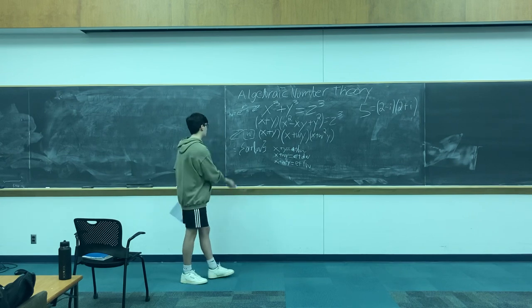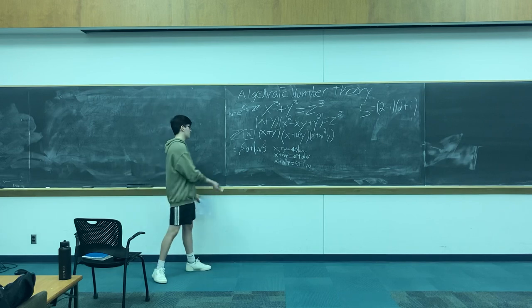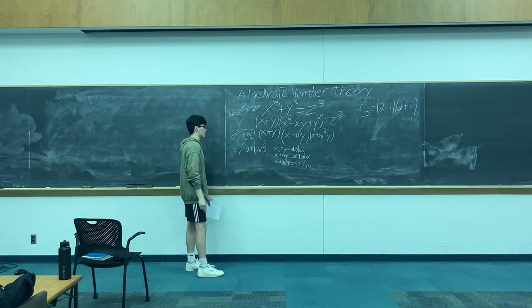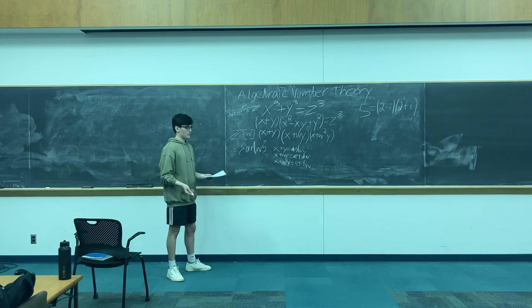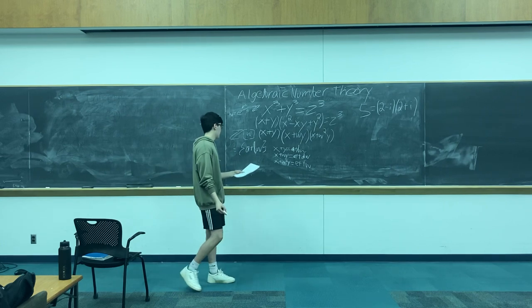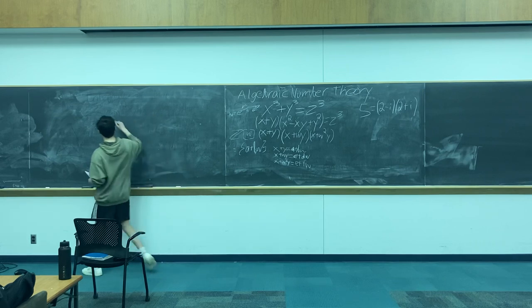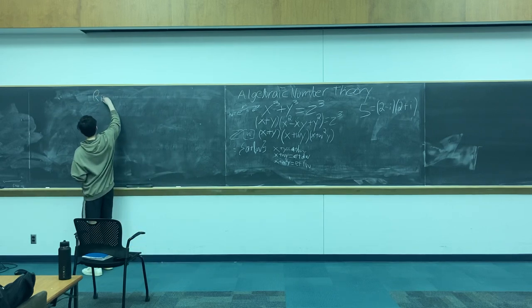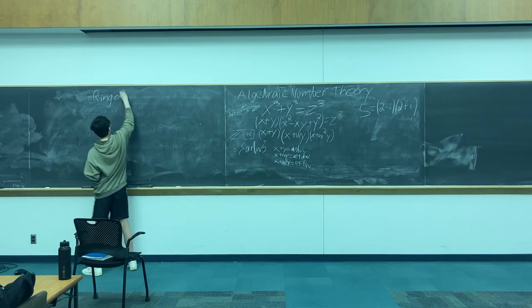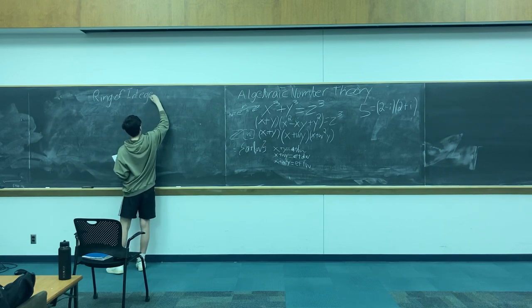So I've introduced Z adjoined ω, but what exactly is that? You can clearly see it's a set — the set of a plus bω, where a and b are integers — but what else? The point is really to get you clear on the different terminologies. Specifically, Z adjoined ω is a ring of integers. So what is a ring of integers?